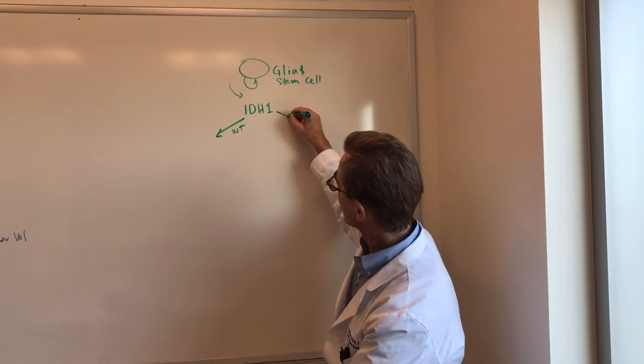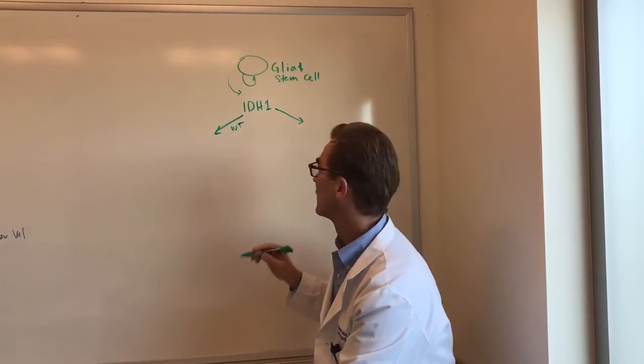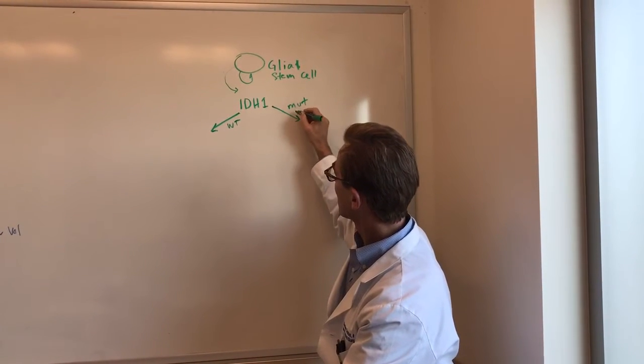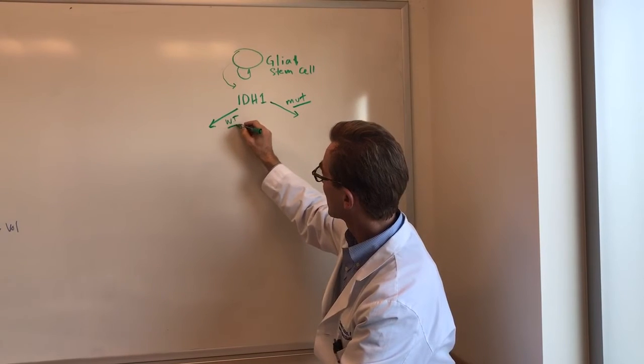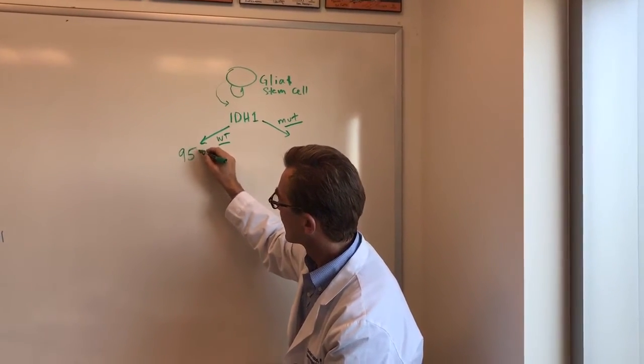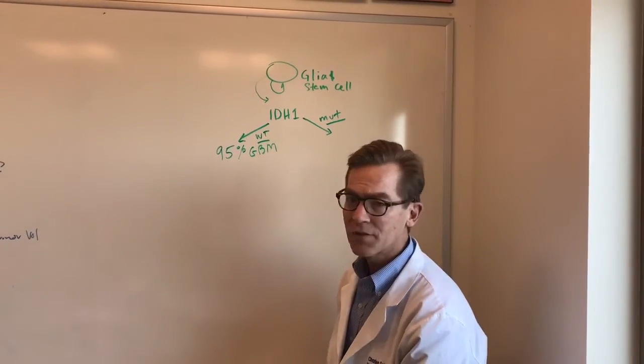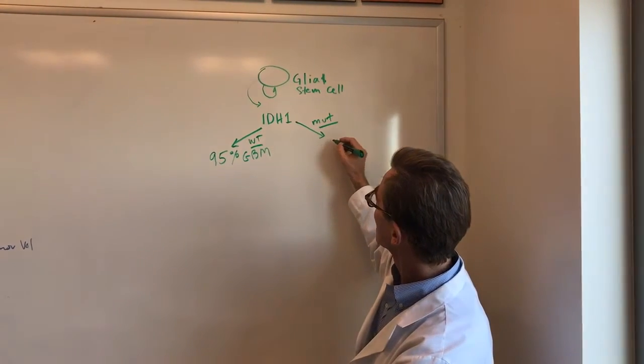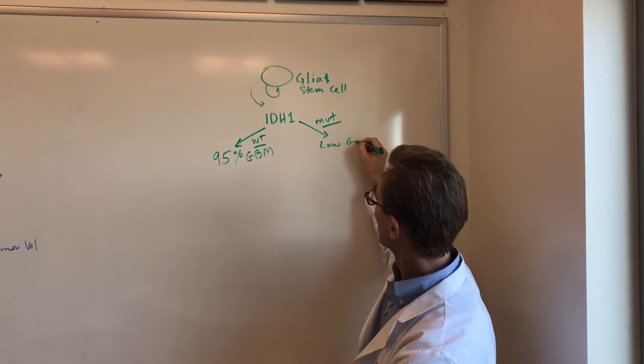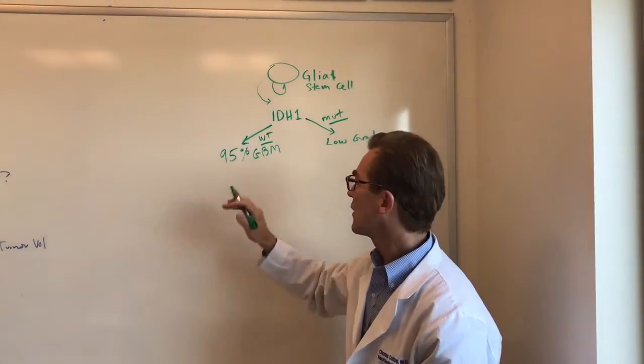However, there are some, a small percent of glioblastomas, but a high percent of low-grade tumors that have IDH1 mutation. So these would be IDH1 mutants, and these would be IDH1 wild types. So I would say about 95% of glioblastomas are IDH1 wild type, and a significant percentage of low-grade gliomas are IDH1 mutant.